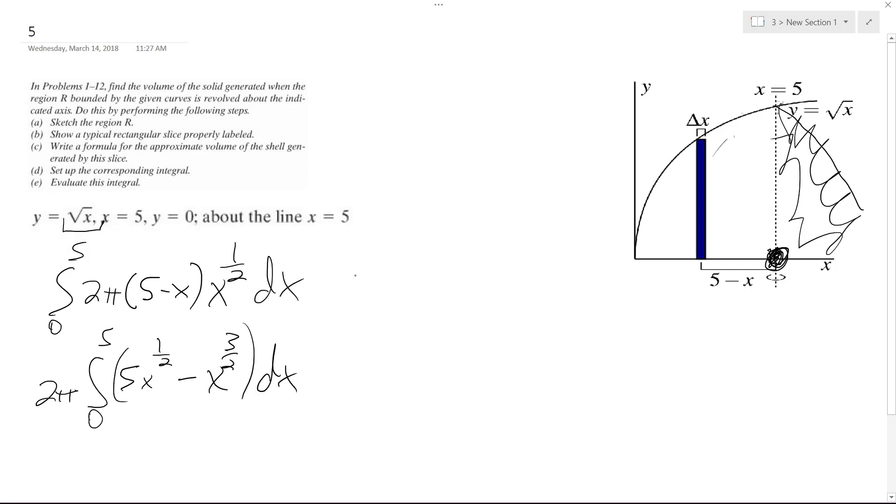So when we integrate this, what we're going to end up with is two pi, and then we'll have ten-thirds x raised to the three halves minus two-fifths x to the five halves.